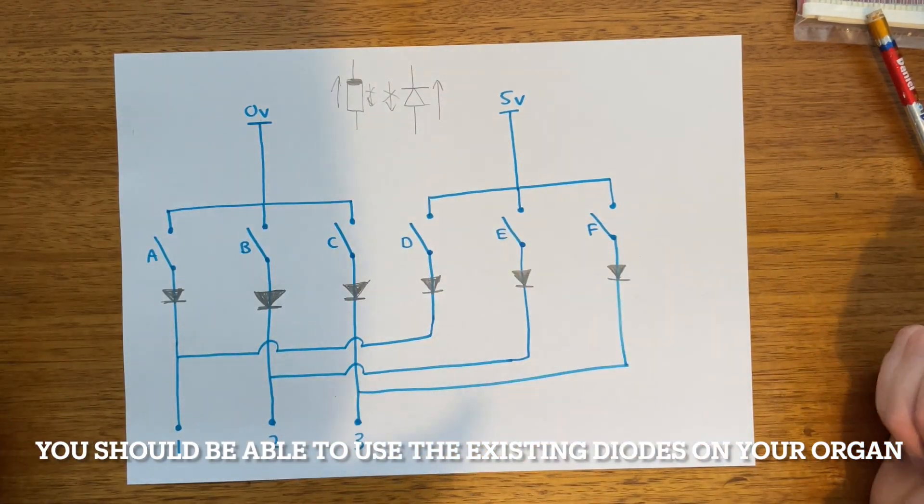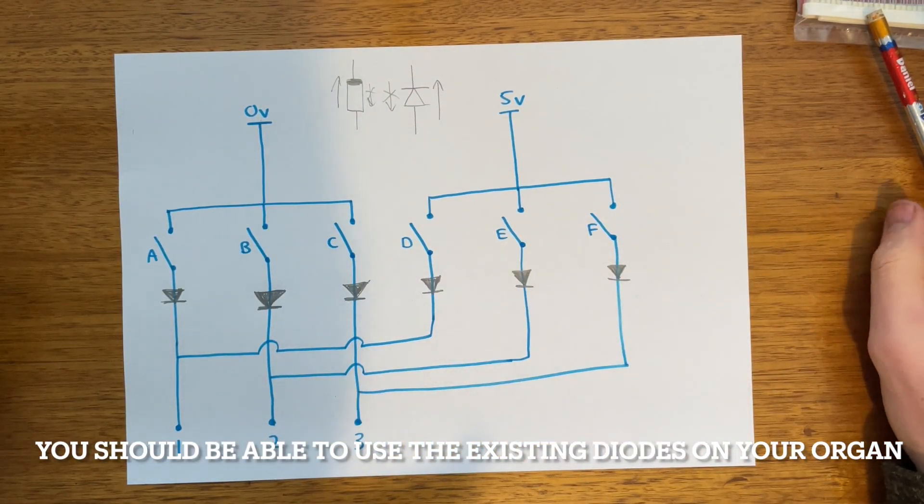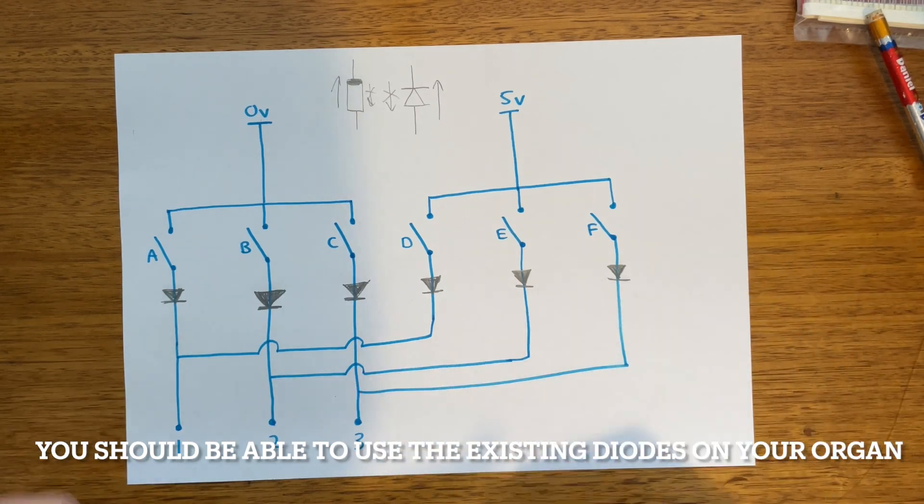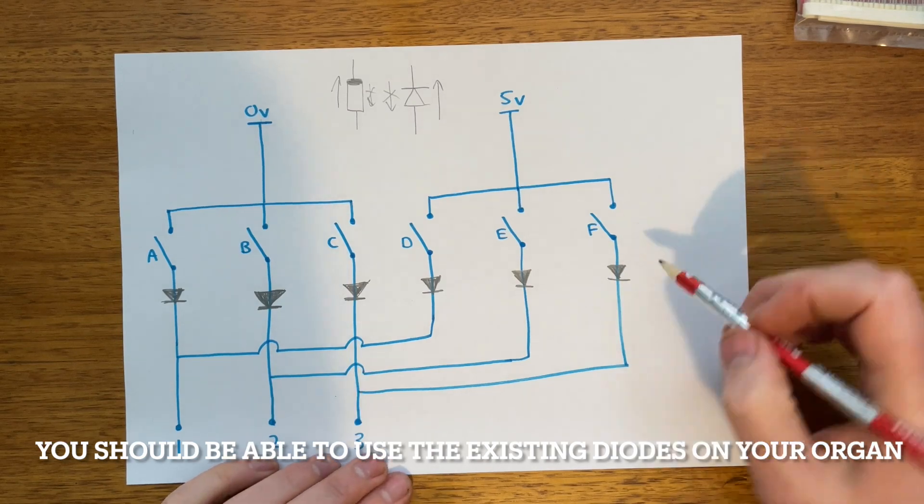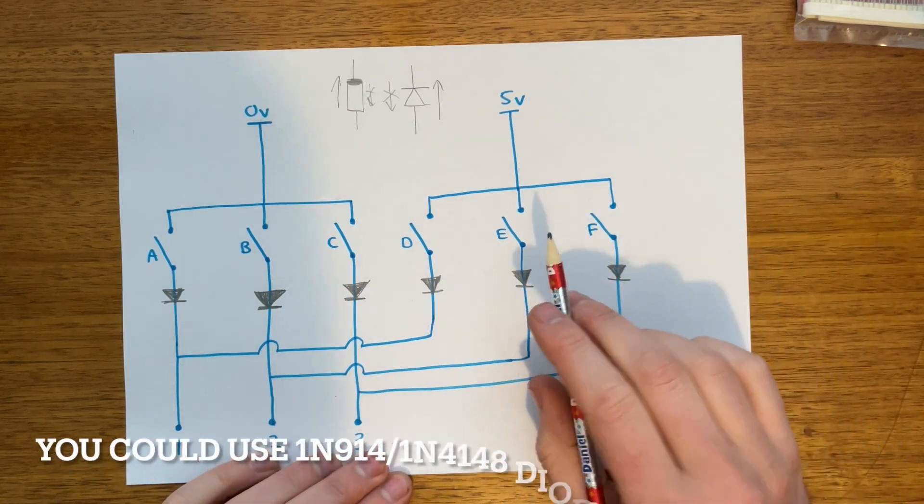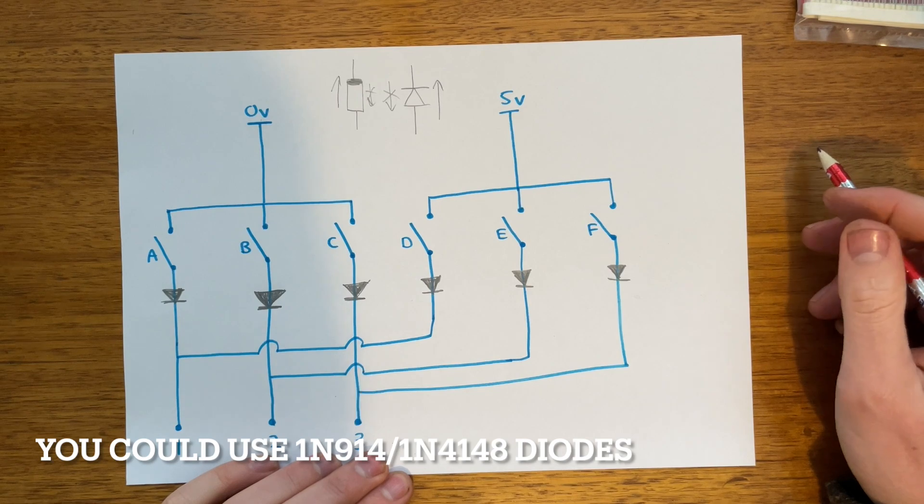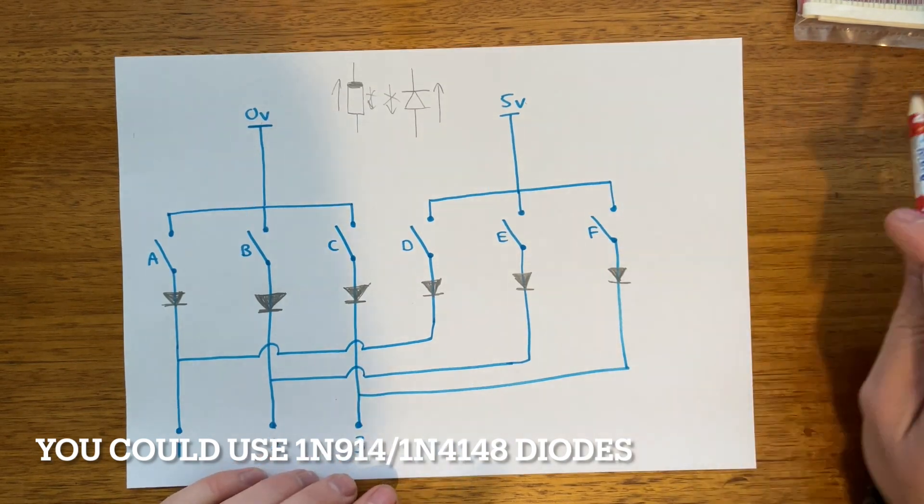And there we have our completed circuit for the matrix arrangement with our diodes in place. When you look at our keyboards, there's two different directions the diodes can be. The diodes can actually be facing up or facing down. And that is a very critical thing to understand.